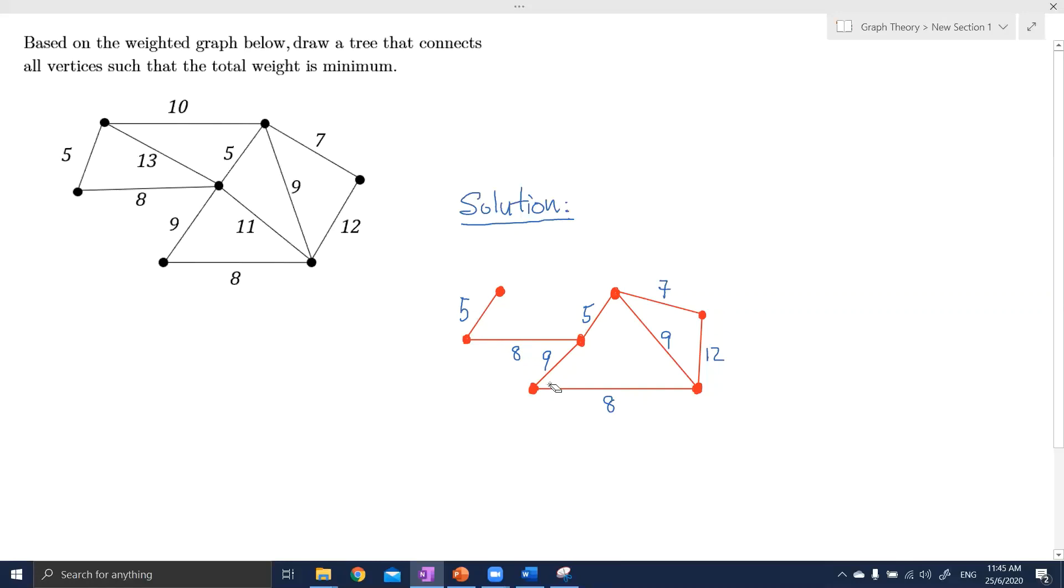And then again, we have a cycle here: 5, 9, 8, and 9. So this is another cycle. And then we can remove one edge with maximum weight. So now we have both edges with maximum weight, which is 9. So we can remove either one of them. So let's say if I remove this 9 and the corresponding edge.